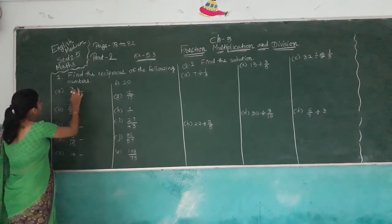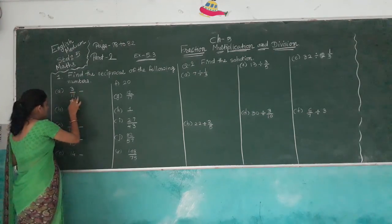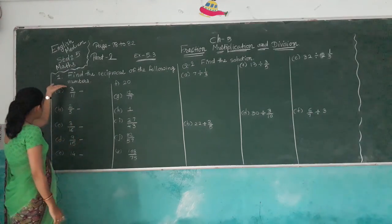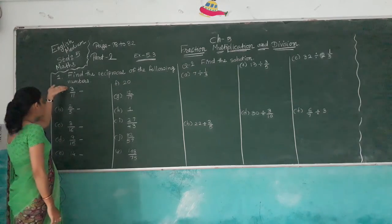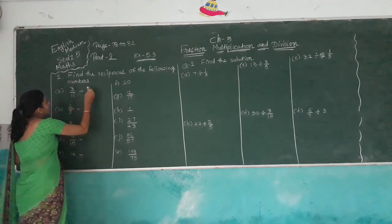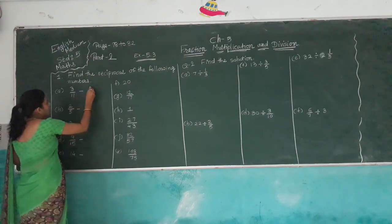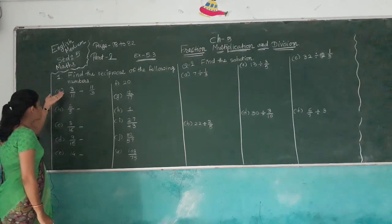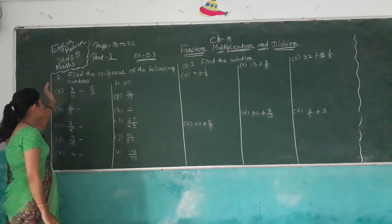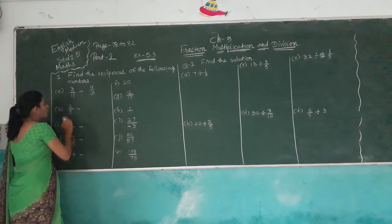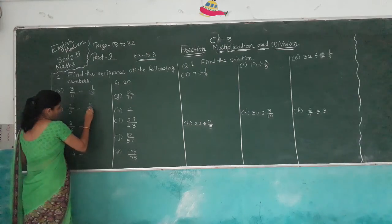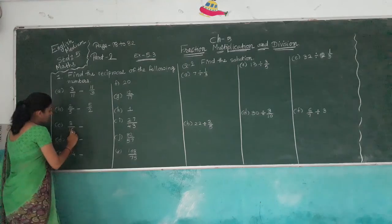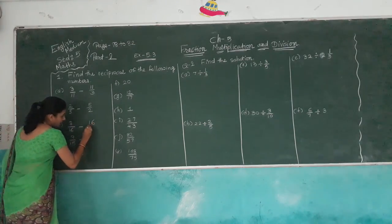Here, 3 out of 11. The numerator and denominator switch positions — numerator into denominator and denominator into numerator. So, the reciprocal of 3/11 is equal to 11/3. Similarly, reciprocal of 2/5 is 5/2. And reciprocal of 3/16 is 16/3.